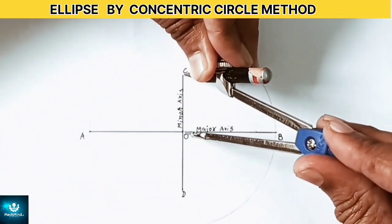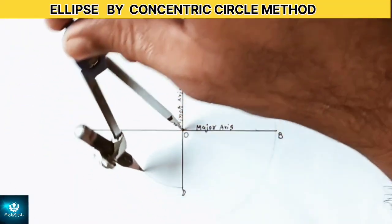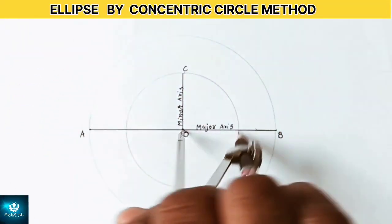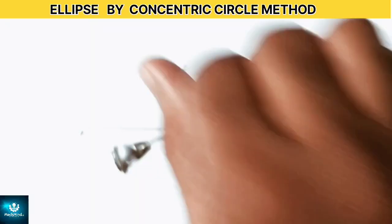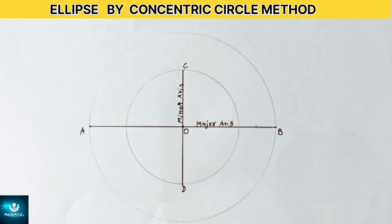Again with the same center O draw another circle such that CD becomes its diameter representing the minor axis. These two circles having the same center but different radius are called concentric circles.